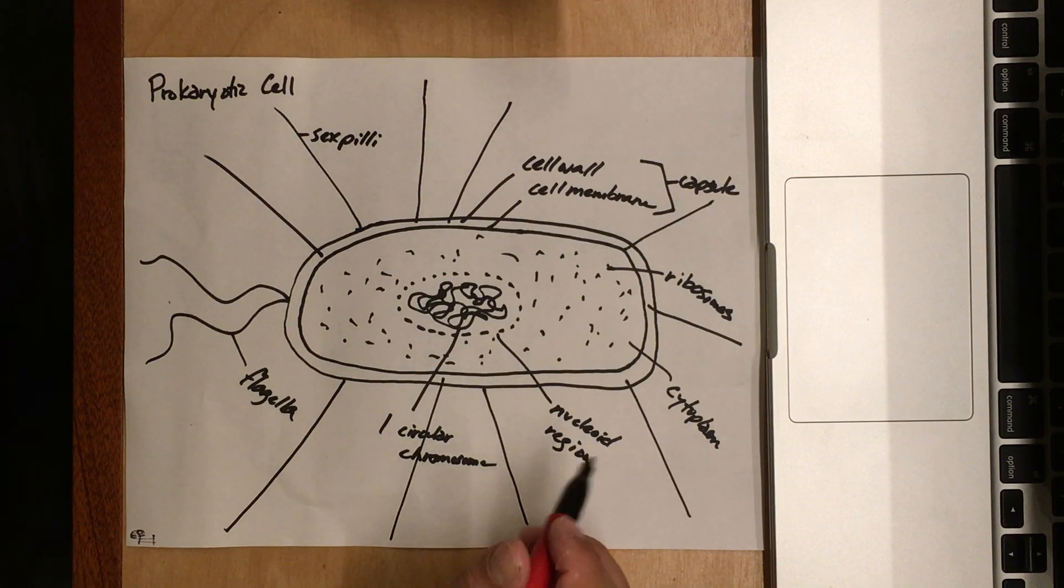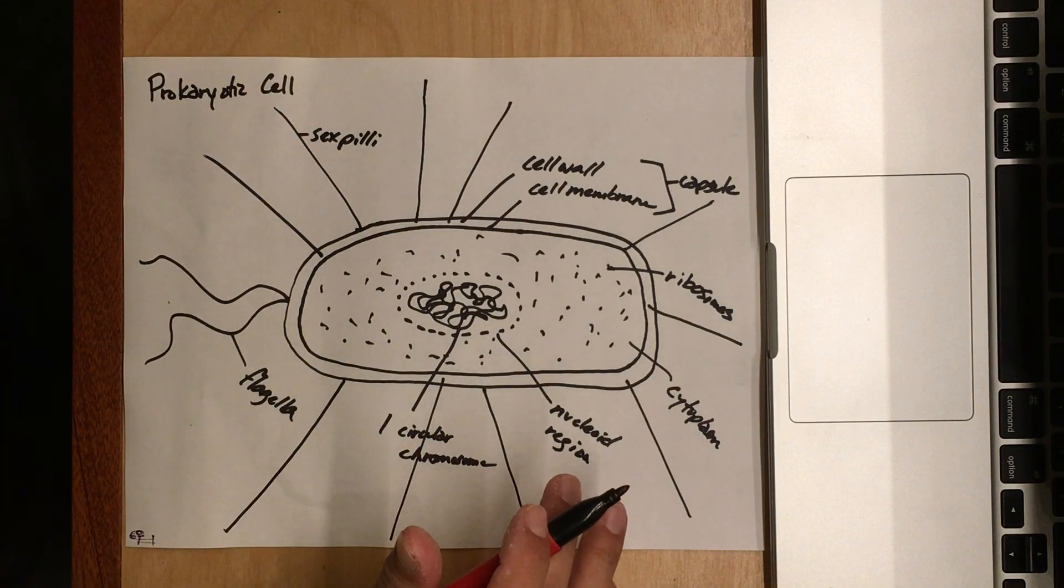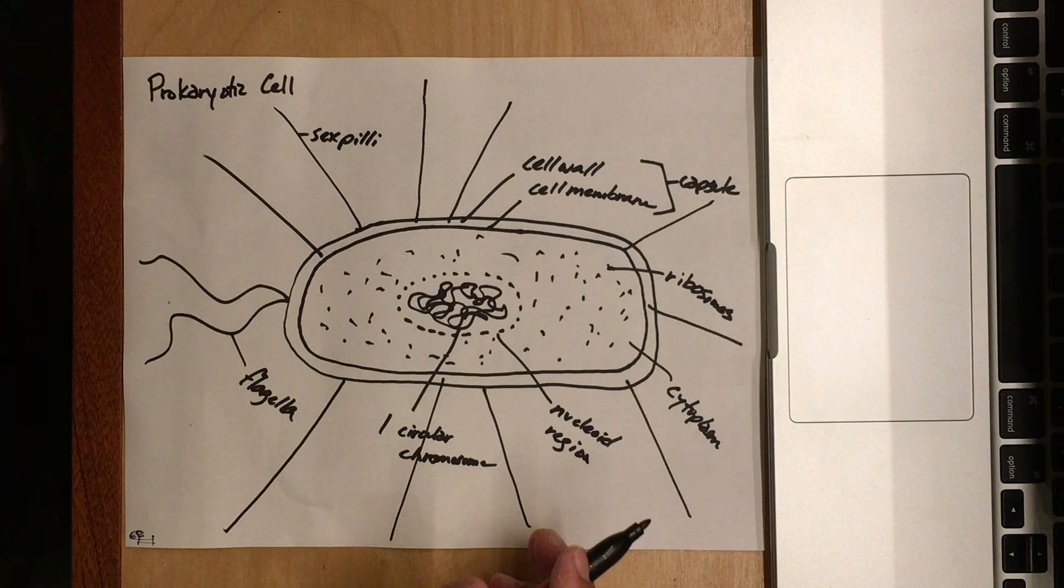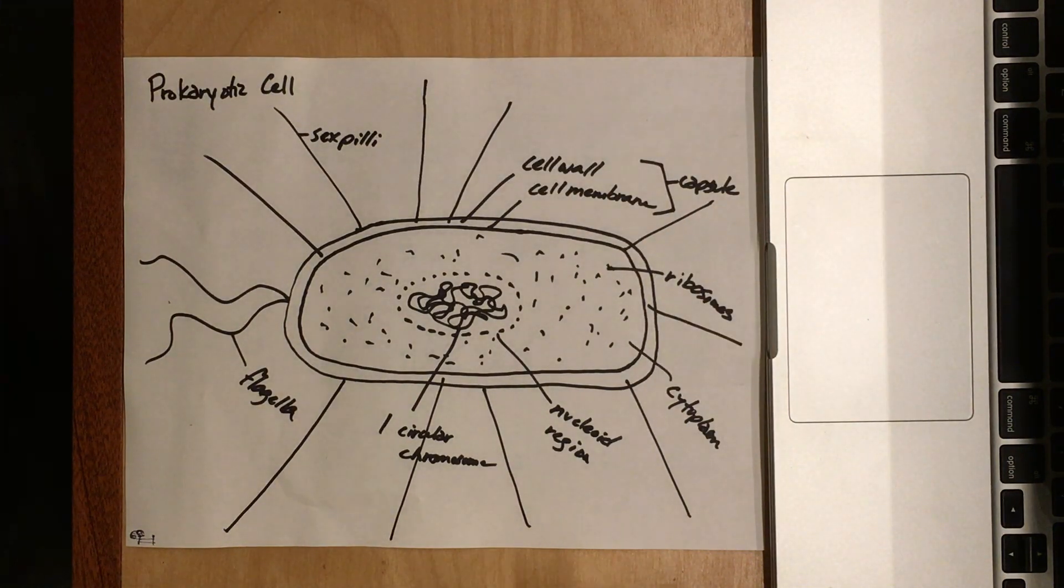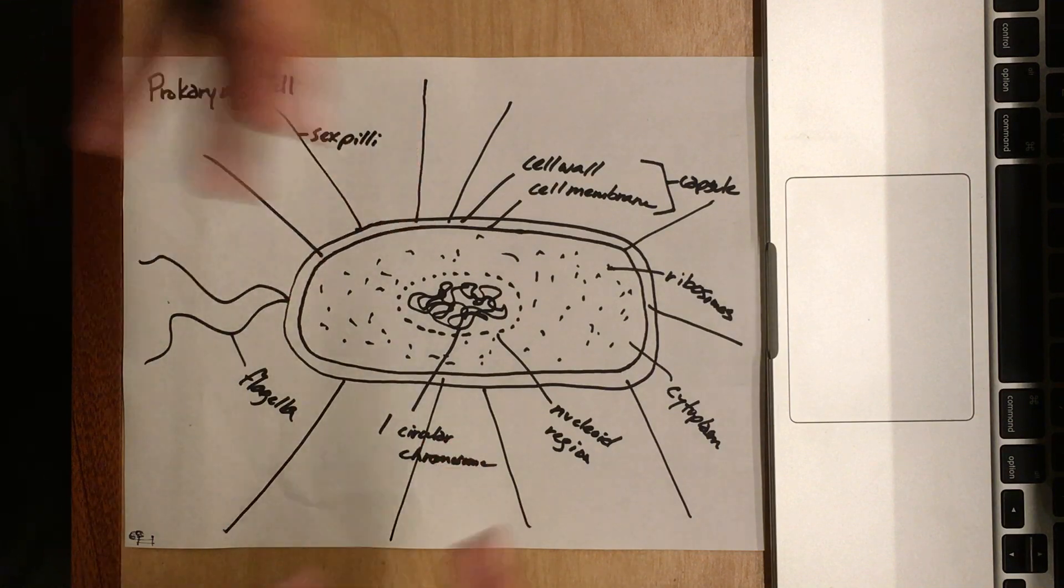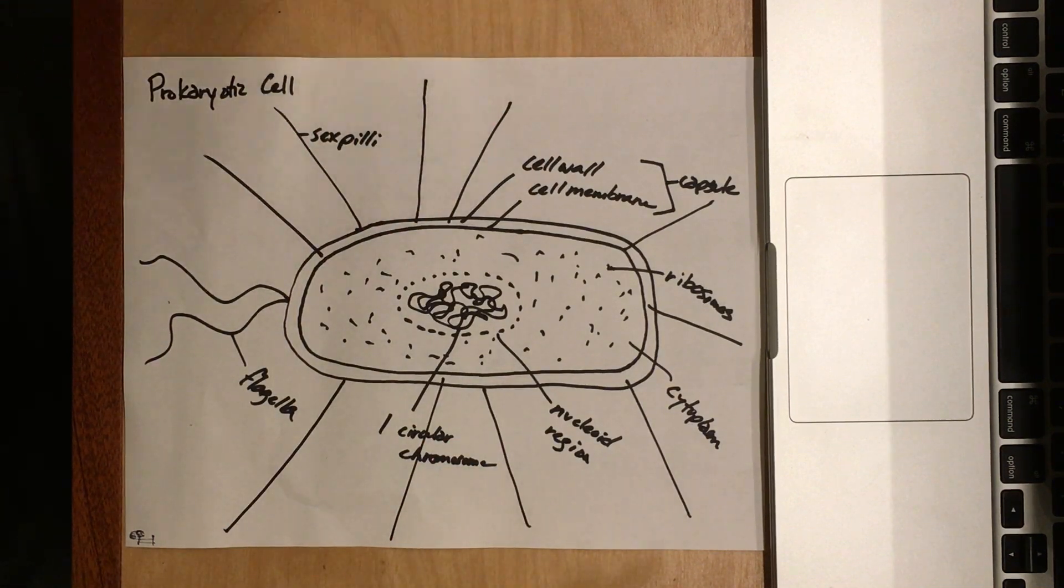If your cells are the size of the school, a bacterium would be the size of you, just for scale. If you have a couple million bacteria on the head of a pin, it might seem like they're really squished together, but that's only because we're thinking about it at our scale.